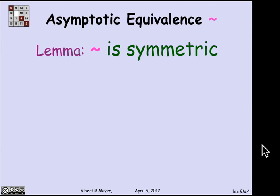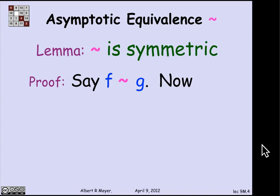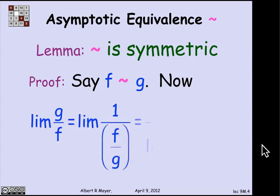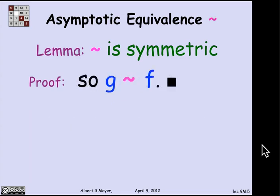There are some easy properties of asymptotic equality that follow immediately from the definition. One of them is that it's symmetric. Namely, suppose that f is asymptotically equal to g. I want to prove that g is asymptotically equal to f. The limit of g over f, which is what I'd like to prove is 1. Well, the limit of g/f by algebra is the same as 1/(f/g). So moving the limit across the division, that's the same as 1 over the limit of f/g, which is 1 over 1. We've proved that g is asymptotically equal to f. It's symmetric.